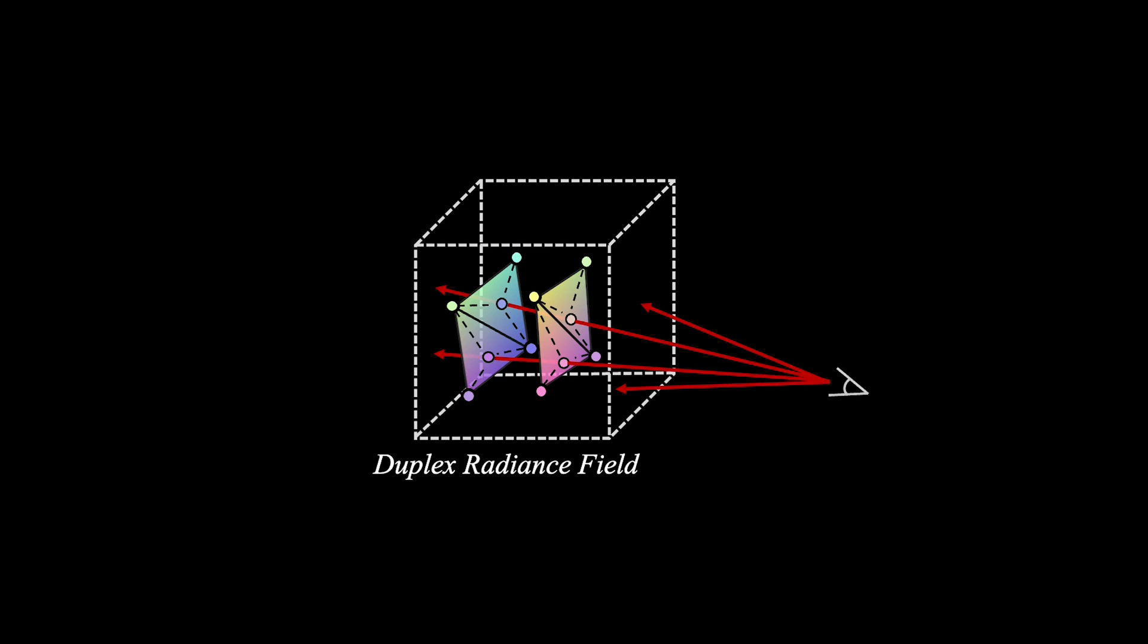Since our radiance field is defined via two geometric surfaces, our encoding is defined by directly attaching learnable features to each mesh vertex for efficiency. Then the features for any point on a triangle could be fast interpolated using barycentric coordinates.